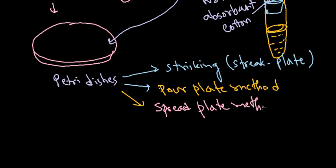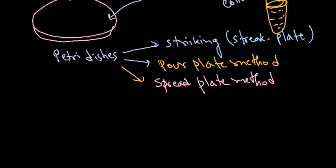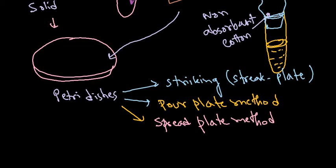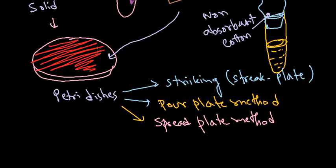For the streak plate method, you take the loop and rub it in a zigzag motion across the agar plate. This gives a streaking kind of appearance — it's like drawing lines in a zigzag orientation on the agar plate. Since the agar plate has a very solid, homogenized, even surface, you can achieve this easily. If the surface is uneven, it will be difficult.